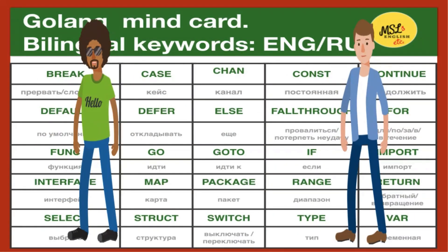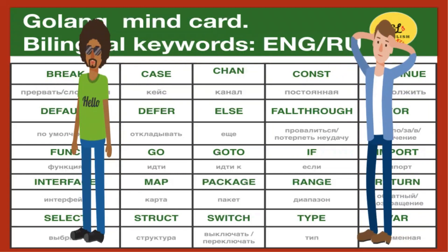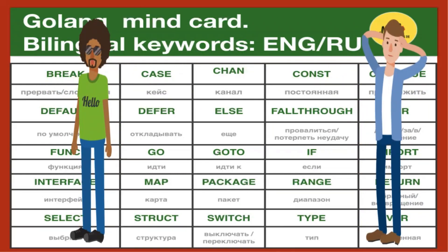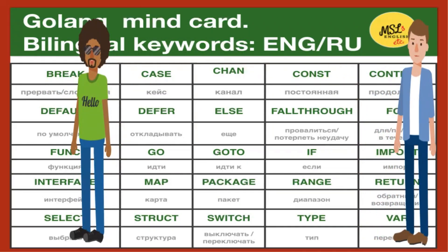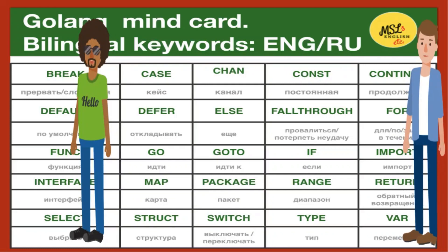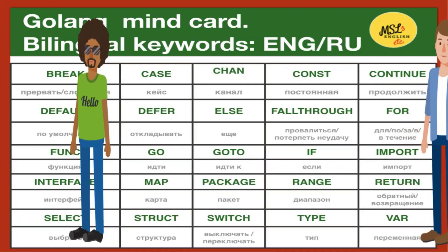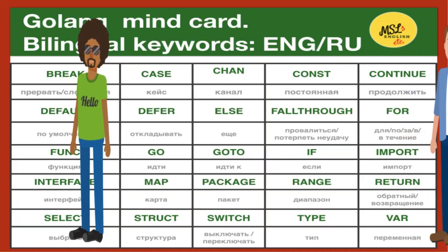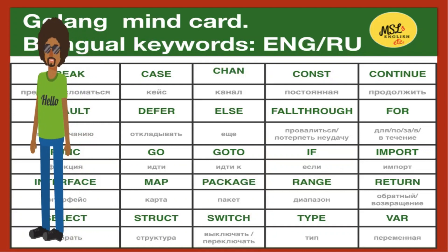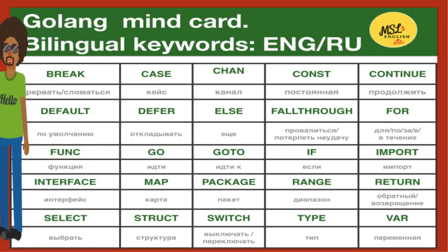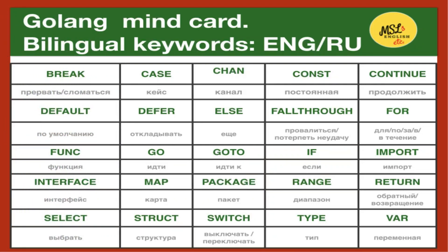Hi guys. We're here. Let's get started to repeat 25 keywords of the Go language. I will speak with the American accent. Victor will speak with the Russian accent. Hi, I'm Victor. I will speak with my Russian accent. Please look at the table and listen to my American accent.